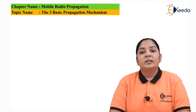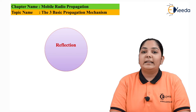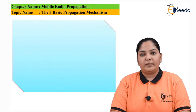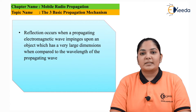The first one is called reflection. Reflection means that the electromagnetic wave in mobile communication is impinging on an object, and the dimension of this object is very much larger than the wavelength of the electromagnetic wave. This is called reflection, because the wave gets reflected through these objects and retransmitted in other areas. This is how the communication takes place.